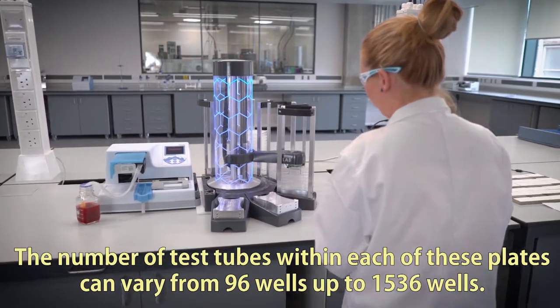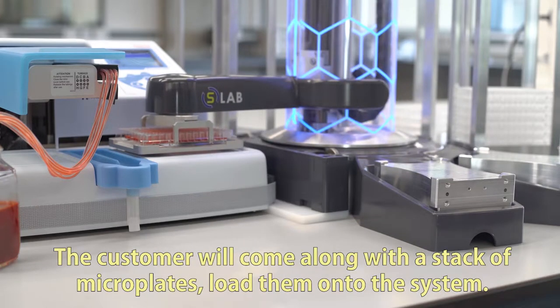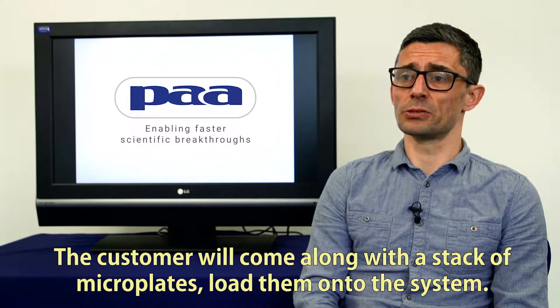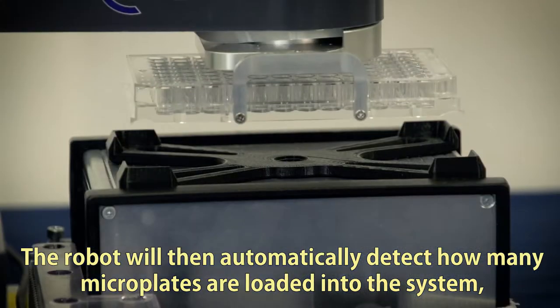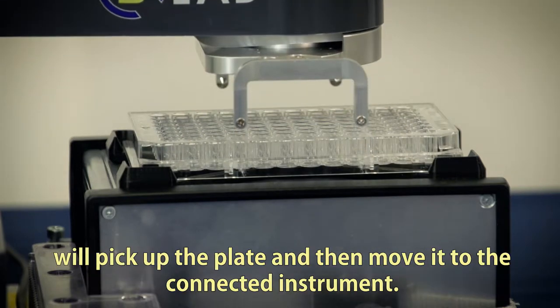The number of test tubes within each of these plates can vary from 96 wells up to 1536 wells. The customer will come along with a stack of microplates and load them onto the system. The robot will then automatically detect how many microplates are loaded into the system, pick up the plate, and move it to the connected instrument.